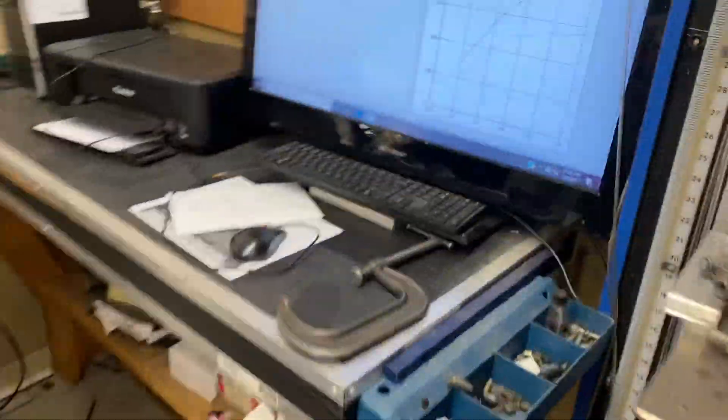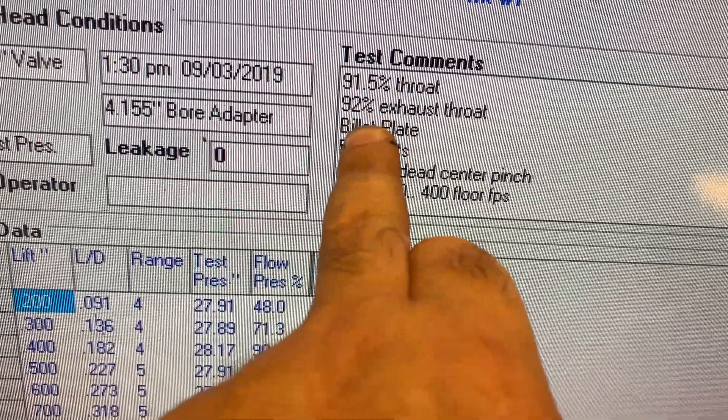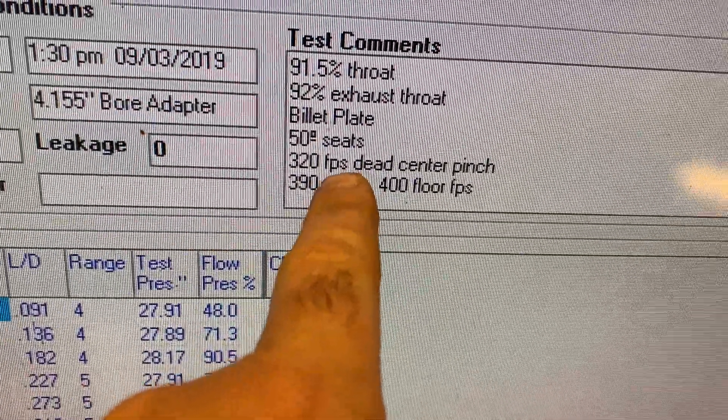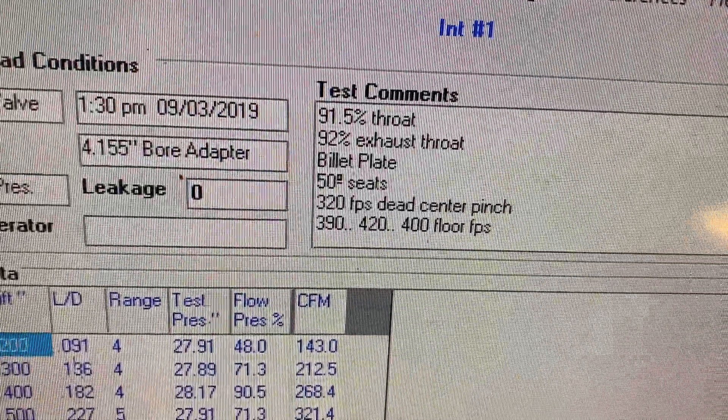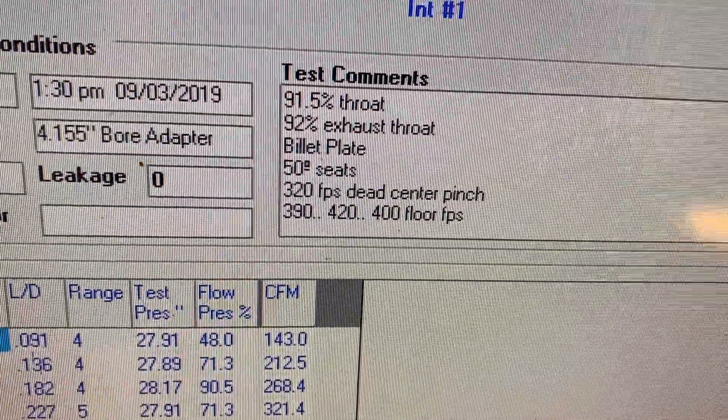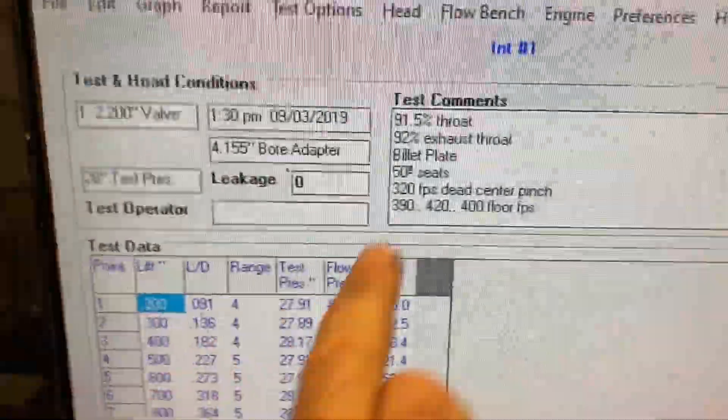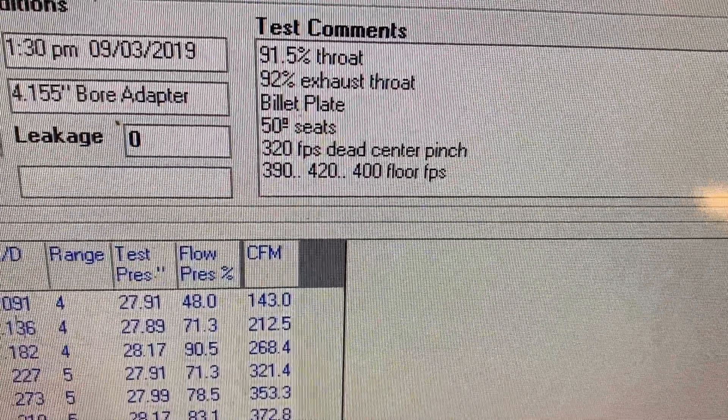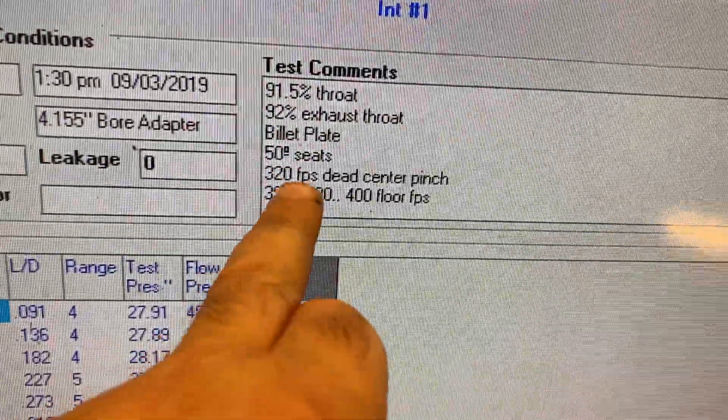So let's go over here to the flow bench. So you can see here in my test comments, like I showed you, got a 91.5 throat, 92% exhaust. I was a little smaller over there. I use a billet plate. It's got 50-degree seats, and it's 320 feet straight through the pinch. That's important. You could do all 12 points. I worry about the center. I mean, that's the easiest. So if that number was high, I would definitely probe the whole port in that area and find out where I can take some material where the local ice speed is too fast.